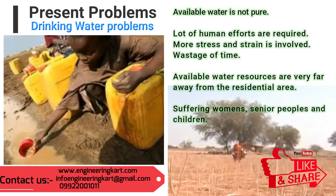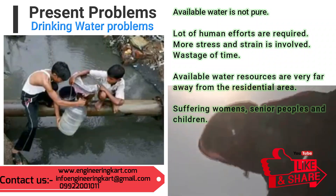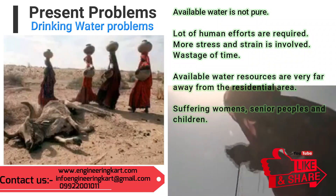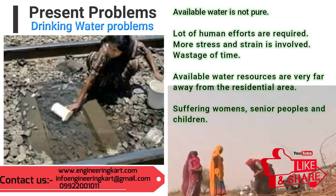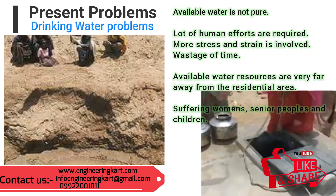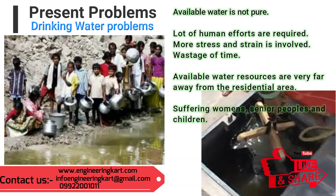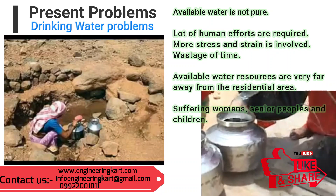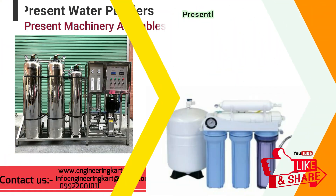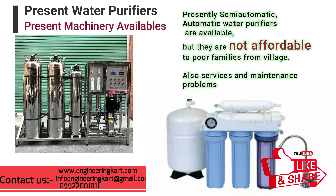Across India, women, senior people, and children from rural areas are wasting more time to fetch water for drinking. Mainly in rural areas, water resources are available far from home. People are facing many problems — human stress and strain is high, it involves wastage of time. Presently, water purification systems are available in the market but they have not reached village areas; cost is not affordable for poor families, and maintenance and service problems are involved.